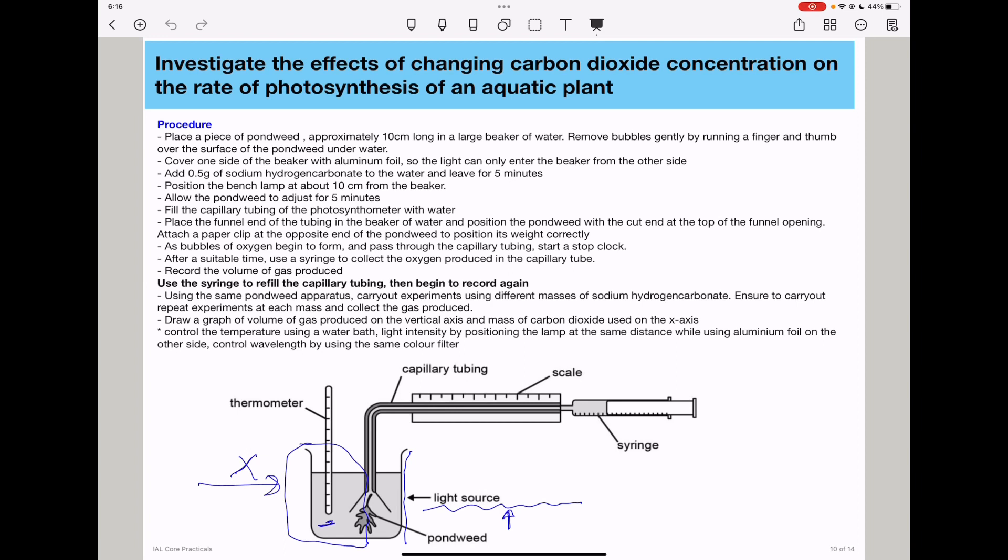If a graph is required, plot volume of gas produced on the vertical axis and mass of carbon dioxide used on the horizontal axis. Control the temperature using a water bath.